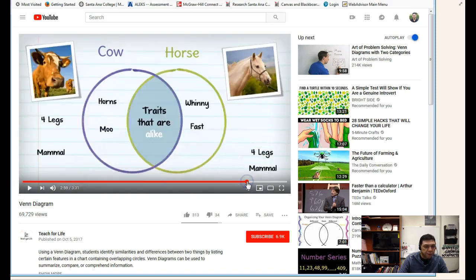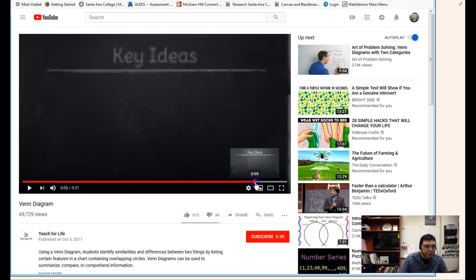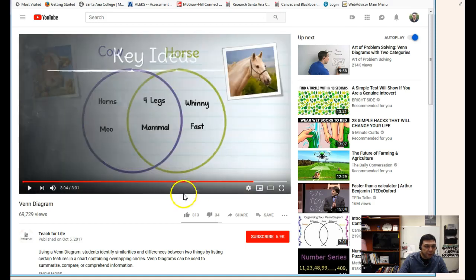You can see the next piece would be in the middle - what traits do they have in common? So cow has horns, it says moo. Horse is whinny and fast - those are only to the horse and the cow. But they have some traits in common which are they're mammals and four legs, so that would be represented by a picture like that right there.